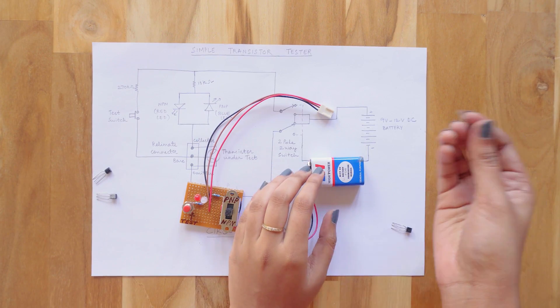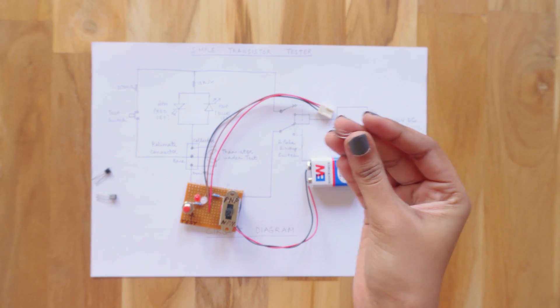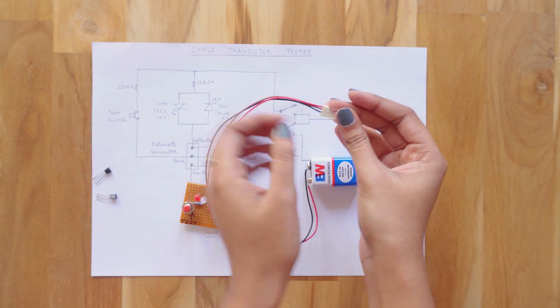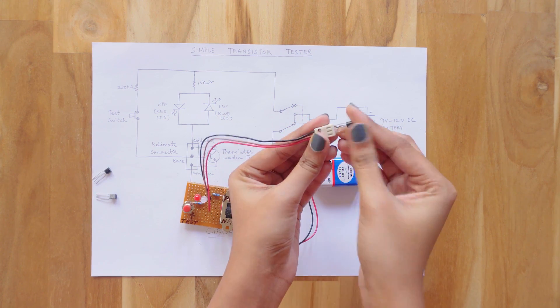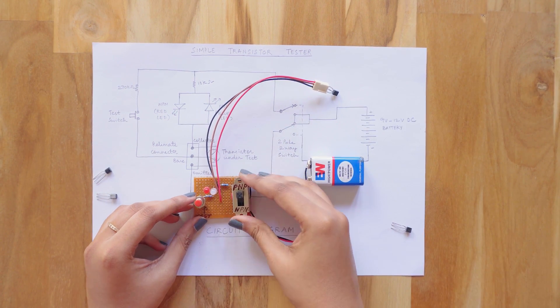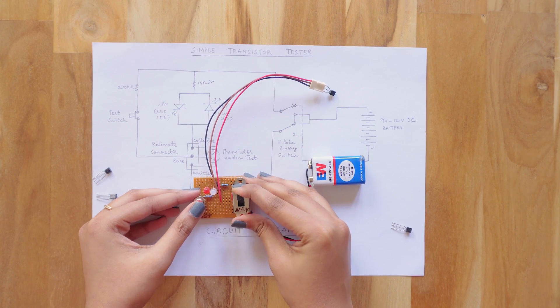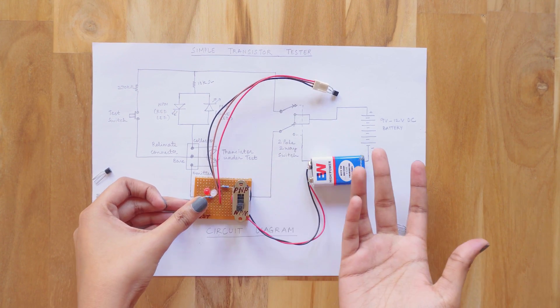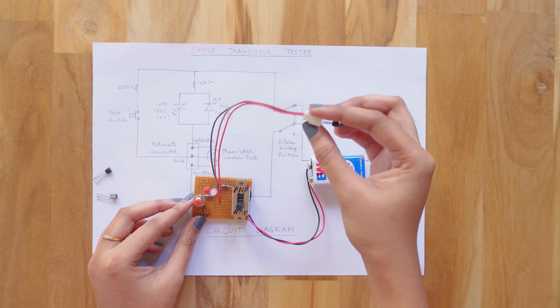Now let's check another transistor. Even this one's a faulty one. Let me place in the connector and show you. Here you can see that the LED is not glowing in PNP position. Now I'm changing it to NPN mode and the transistor is still not responding to the test switch. That means it's an open-circuited or a faulty transistor.